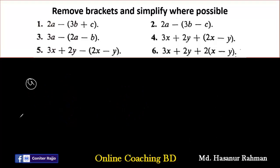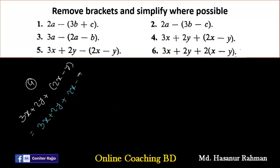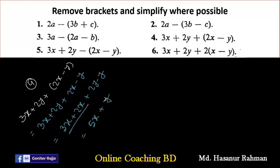Number 4 says: 3x plus 2y plus (2x minus y). First we have to remove the brackets, giving 3x plus 2y plus 2x minus y. Then rearranging: 3x plus 2x equals 5x, and 2y minus y equals y. So 5x plus y is the answer of number 4.